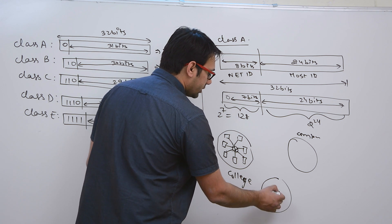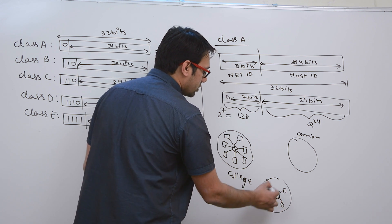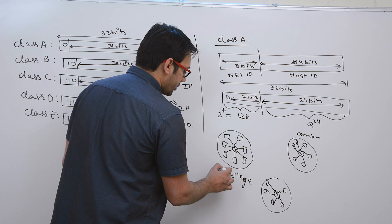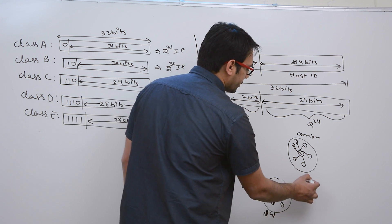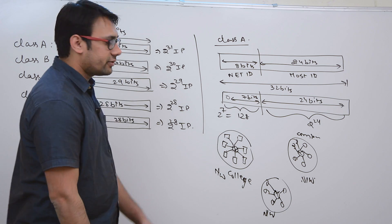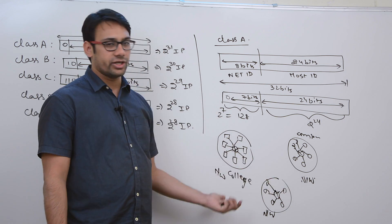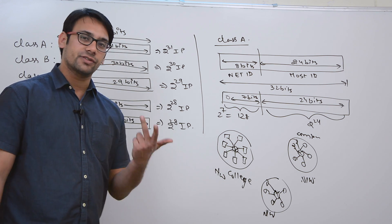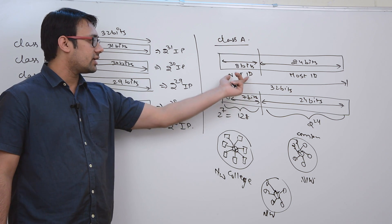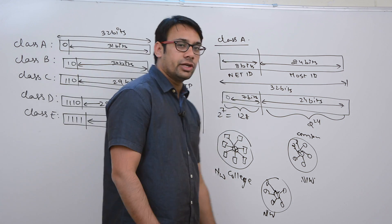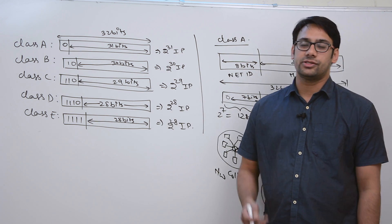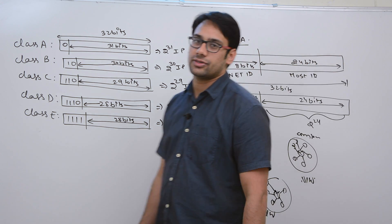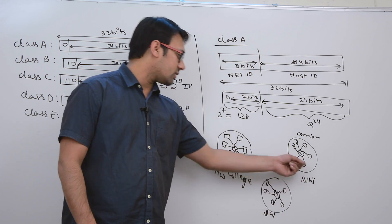Within each network we have multiple hosts. The network ID is used to identify the network — what network it is. For example, if we have 3 networks, we can represent them with 2 bits. But in case of class A, 8 bits are used for network ID, and since the first bit is fixed as 0, the remaining 7 bits give us 2 raised to power 7 different network combinations.